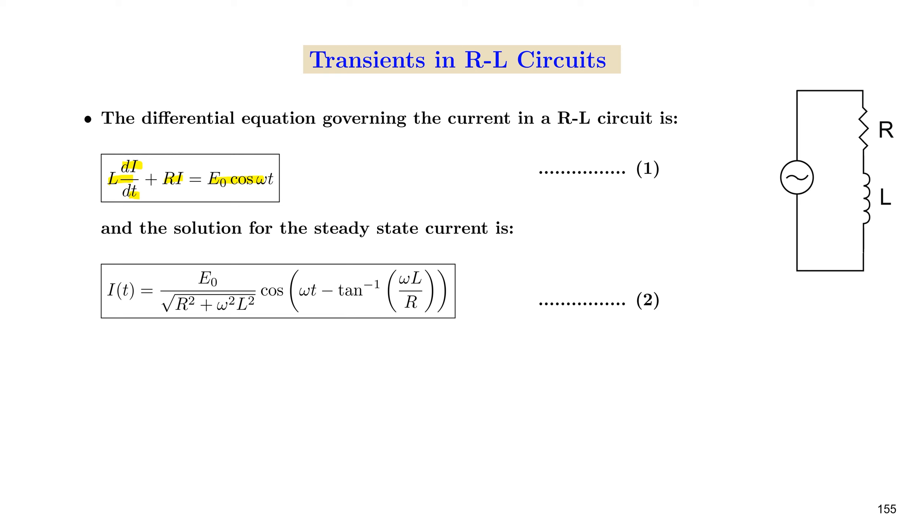And we found the solution at the steady state as I(t) = E0/√(R² + ω²L²) × cos(ωt - tan⁻¹(ωL/R)).